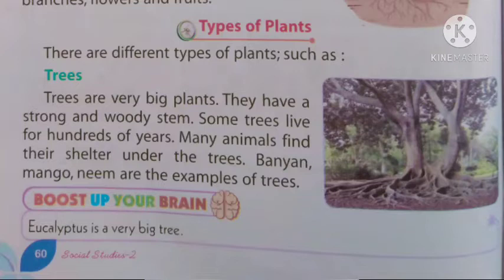Eucalyptus is a very big tree. Eucalyptus - जो सफेदा का पेड़ देखे हो, खेतों के किनारे और सड़कों के किनारे लगा देते हैं लोग - पतला, मोटा, बहुत लंबा, ऊँचा-ऊँचा पेड़ होता है, उसको eucalyptus कहते हैं। सफेदा का पेड़।